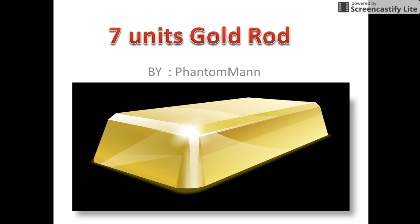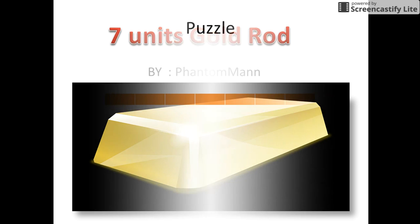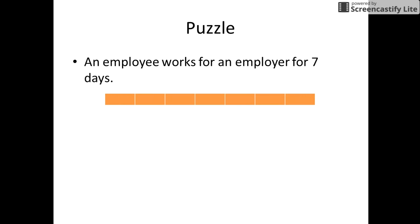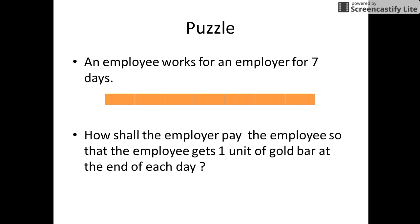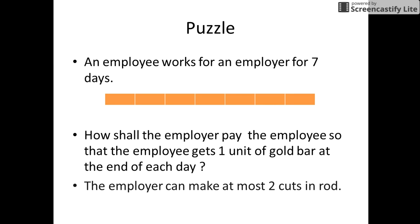Hello friends, today we will see an interesting puzzle: the seven-unit gold rod puzzle. In this puzzle, an employee works for an employer for seven days. The employer has a gold rod of seven units. How shall the employer pay the employee so that the employee gets one unit of gold bar at the end of each day? This might seem really easy, but the condition is the employer can make at most two cuts in the rod.